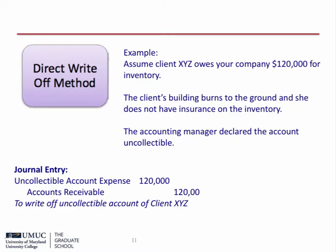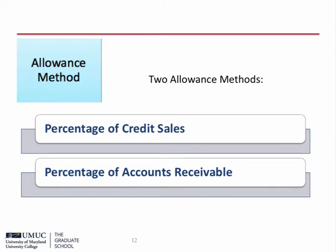FASB prefers the allowance method and requires this method when the amounts are material. The allowance method uses the allowance for doubtful accounts to record estimated uncollectible accounts. There are two approaches to using the allowance method. First, the percentage of credit sales, which is also known as the income statement approach. Second, the percentage of accounts receivable, which is also known as the balance sheet approach.